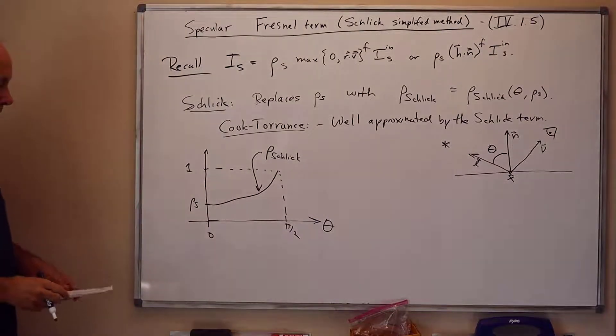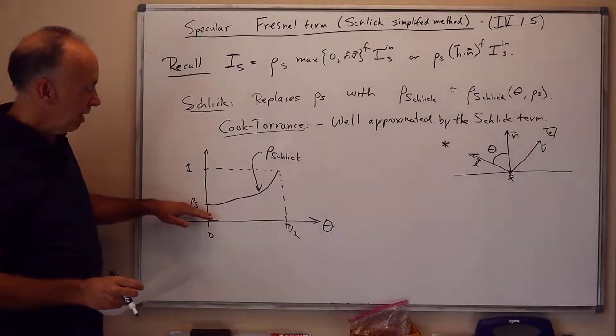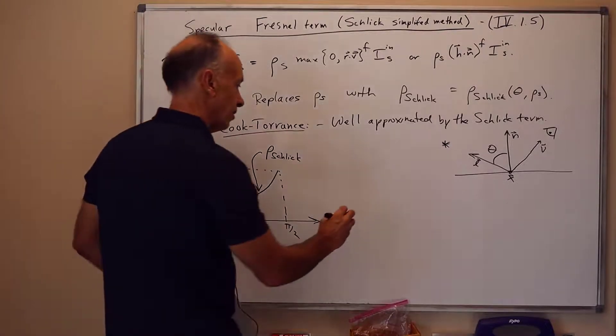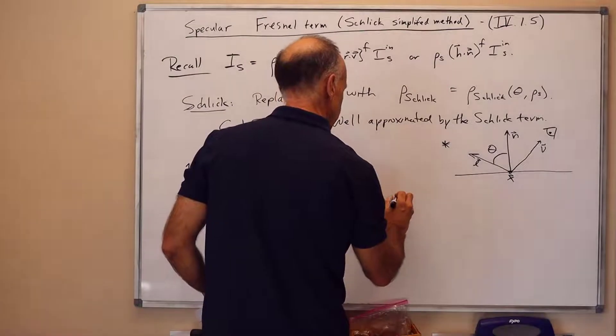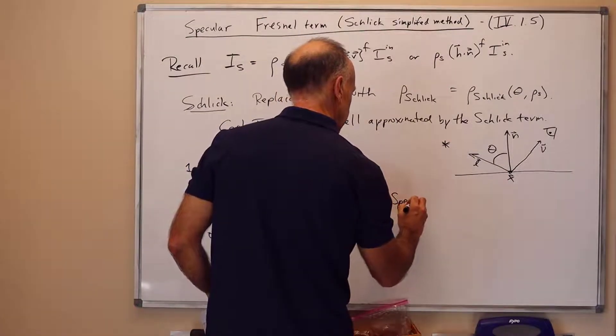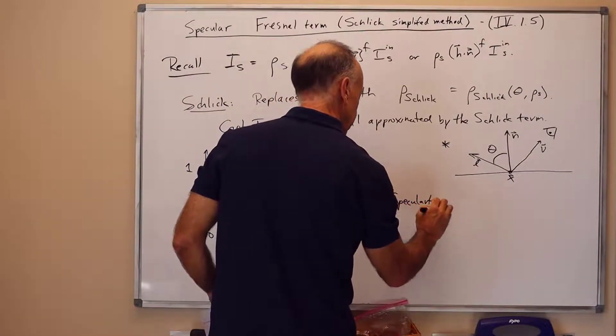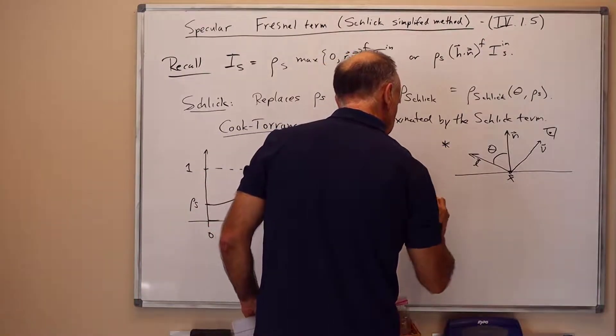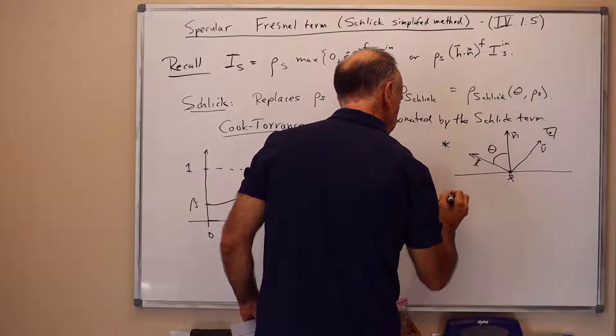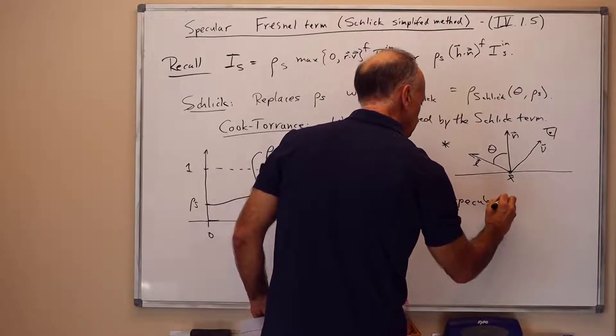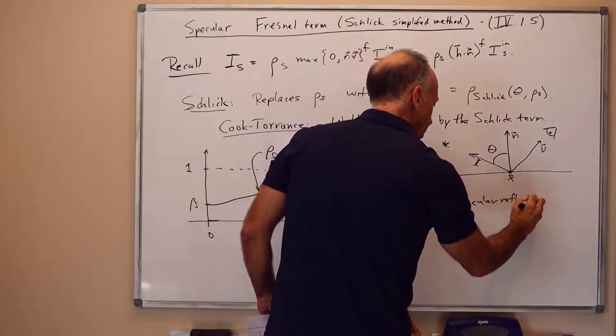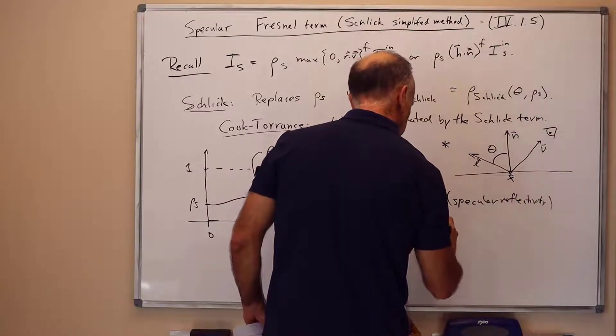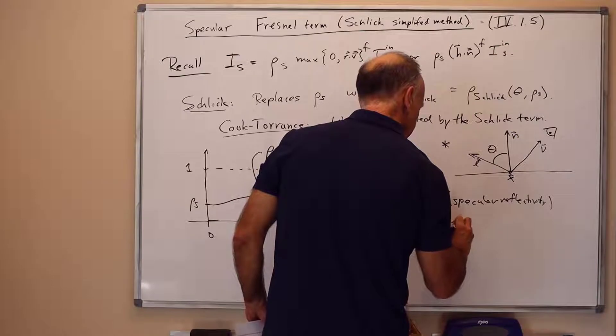And when theta is pi halves, it's 1. So this is the rho Schlick graph. Looks like this. So the point is that when rho s then turns out to be the specularity for light shining straight down on the surface.